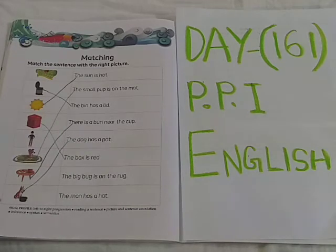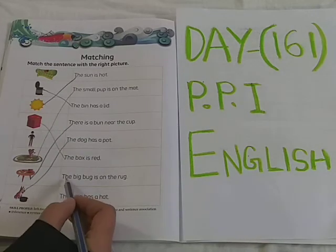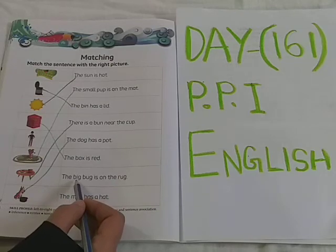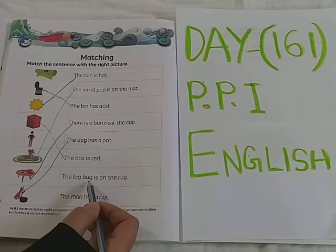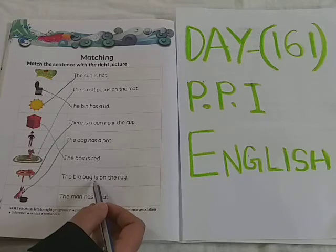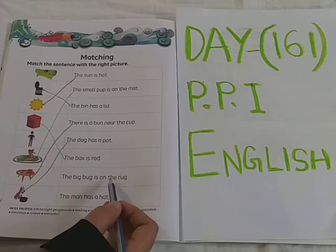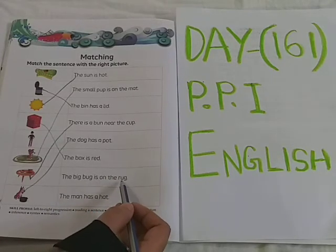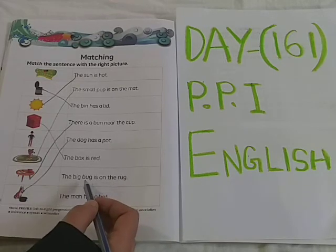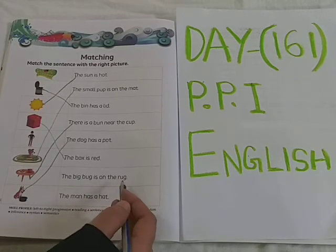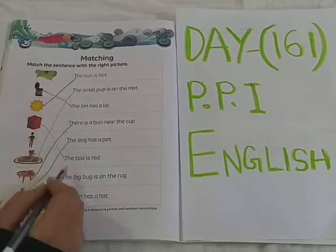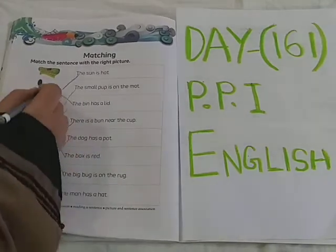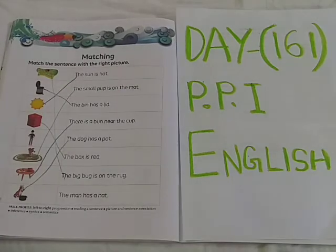See the next sentence now. T-H-E — The. B-I-G — Big. The big. B-U-G — Bug. I-S — Is. O-N — On. T-H-E — The. R-U-G — Rug. The big bug is on the rug. You can see the big bug is on this rug. So this sentence is matching with this picture.